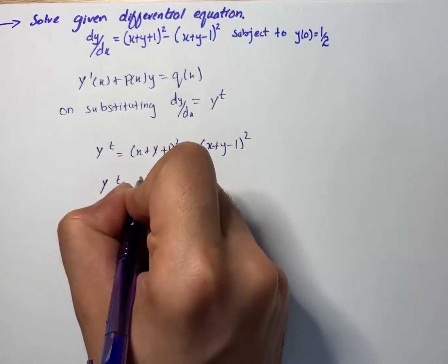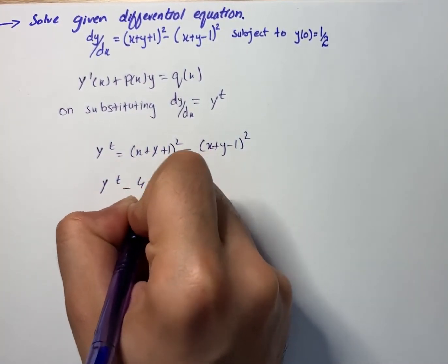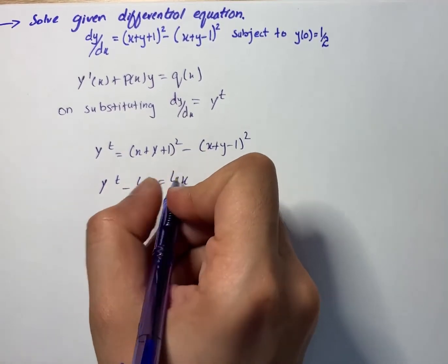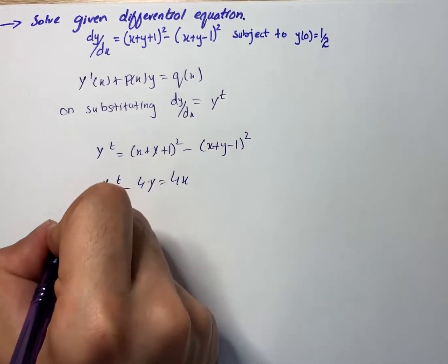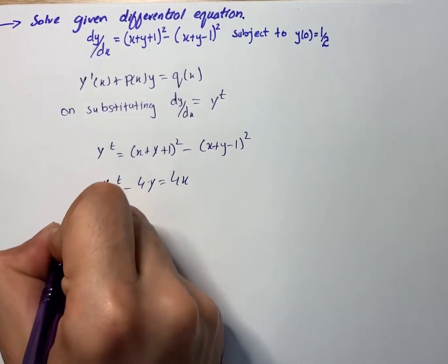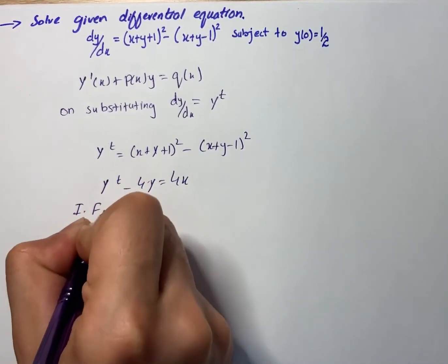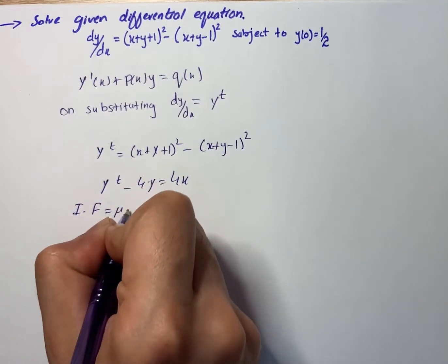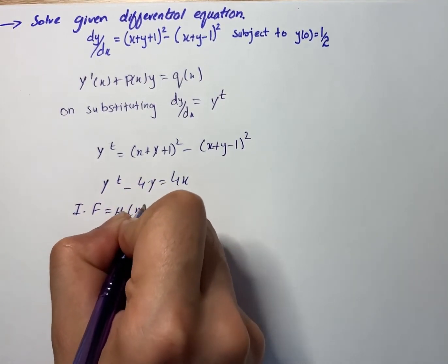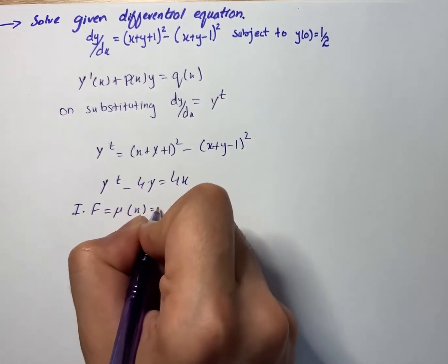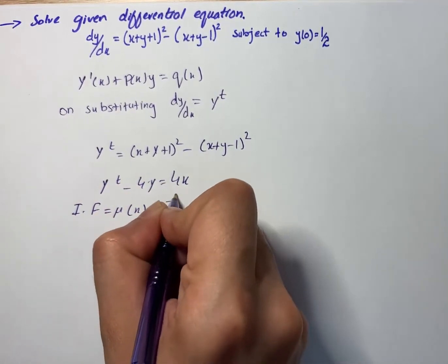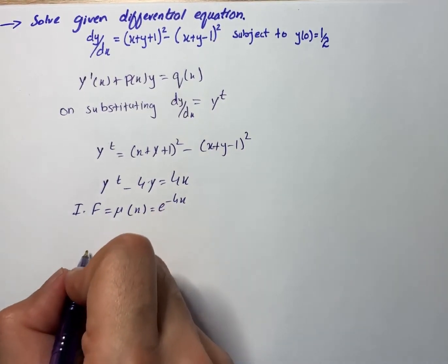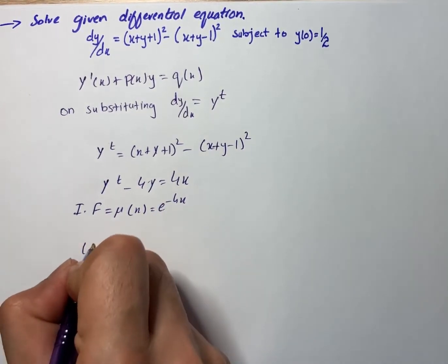y' minus 4y equals 4x. The integration factor is I(x) equals e raised to power minus 4x. Thus, writing the equation in standard form...